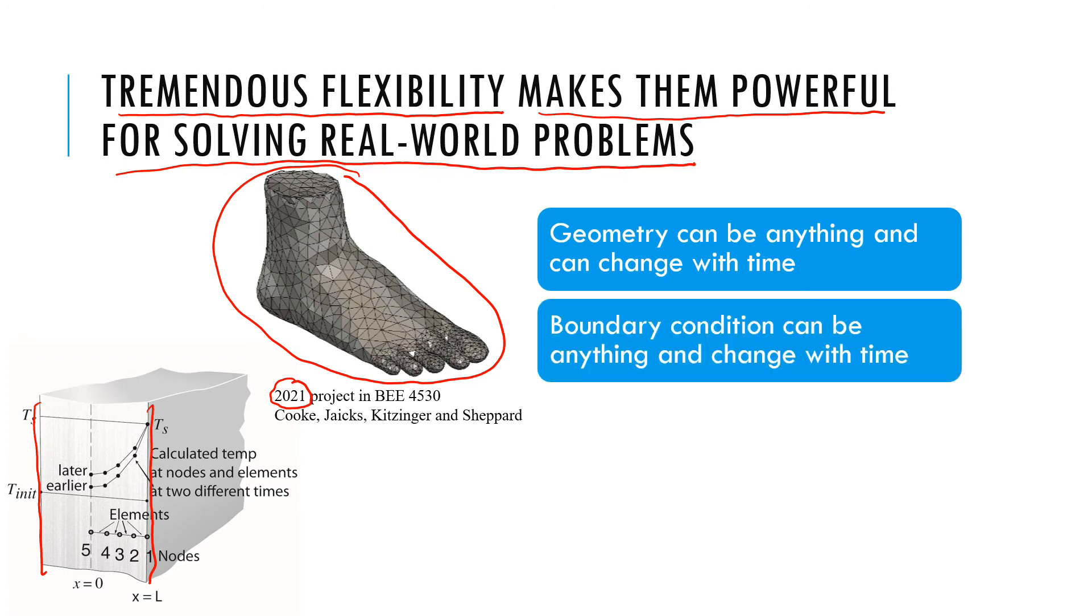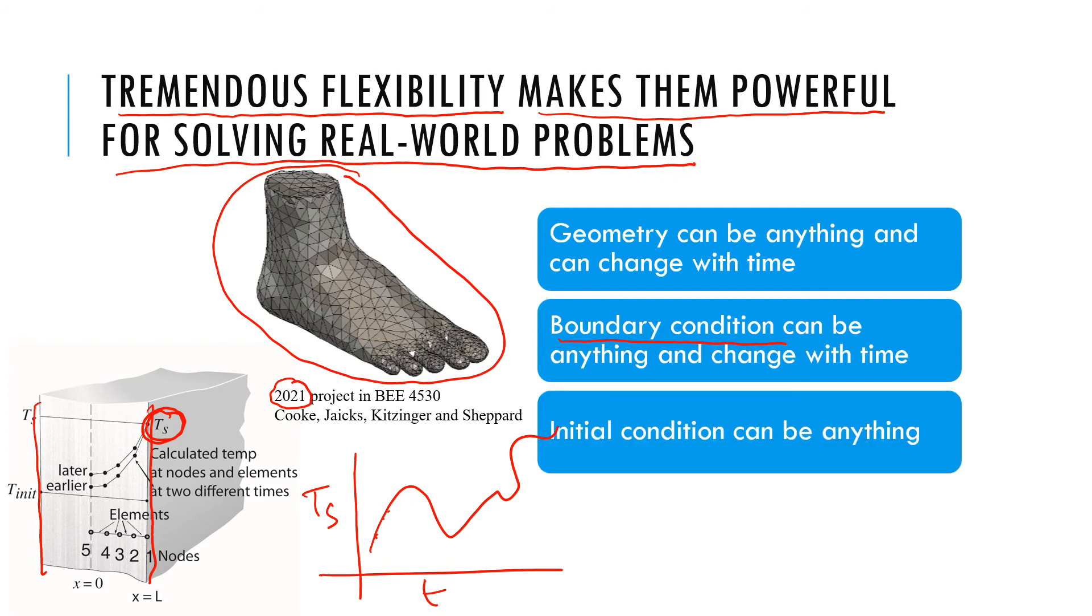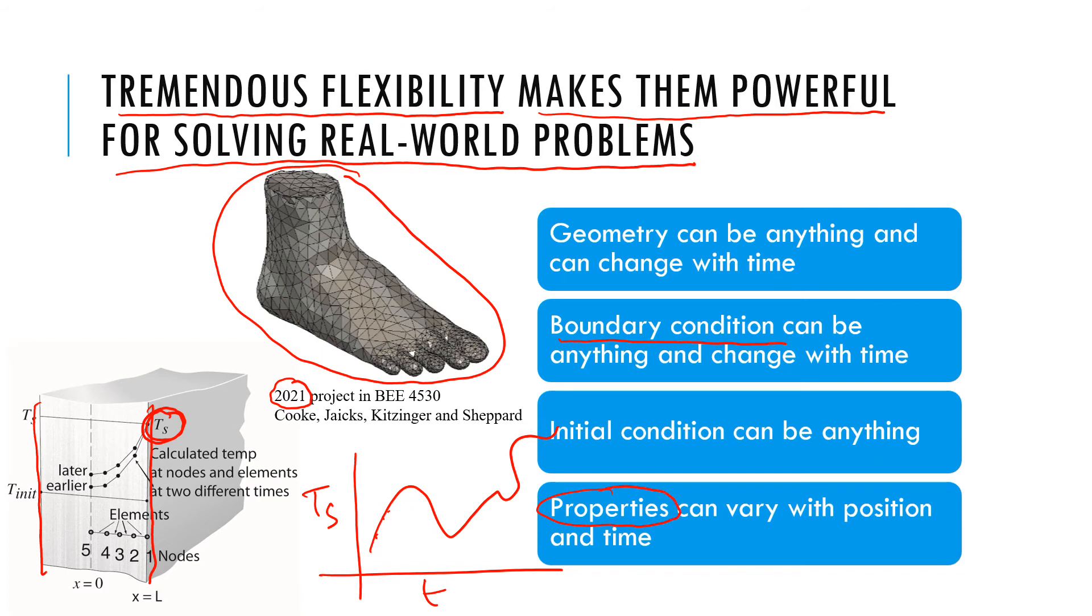What are other things? The boundary condition for our analytical solution, this guy had to be constant. Now, the boundary condition can change with time any way it wants. We just need the values. So it's flexible that way. Then, the initial condition can also be anything in a similar manner. And the properties can vary any way you want. And the other thing is, in geometry, not only it can be anything, it can change with time.